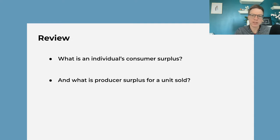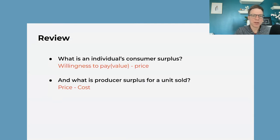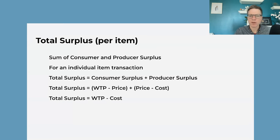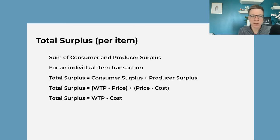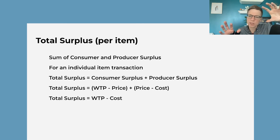As some retrieval practice: what's consumer surplus, what's producer surplus at the individual level? Then we introduce the idea of total surplus, which is consumer and producer surplus added together. Ultimately, as we do the equations out, what it is is the value of the consumers — their willingness to pay — minus the cost of producers. This is where surplus comes from: there are a group of people that value the good more than it costs to produce it, and this creates surplus.